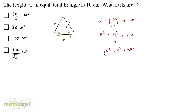So 4A² minus A² is 3A² = 400. Therefore A = √(400/3) = 20/√3. So we have the value of A and we can now calculate the area.